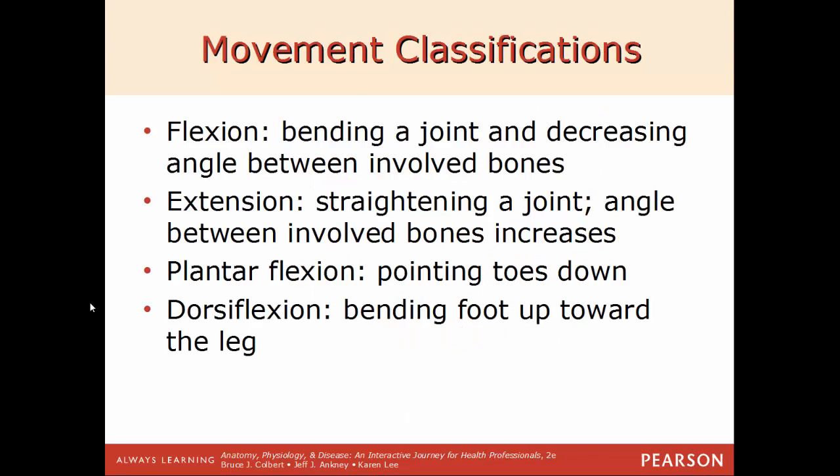Now we'll move on to the different classifications of movement. Many of these have an opposite type of movement. Flexion is when you're bending a joint and decreasing the angle between the bones involved — for example, flexing your bicep decreases the angle between the upper and lower arm bones. The opposite is extension — straightening out the arm increases that angle. Plantar flexion and dorsal flexion involve the feet. Plantar refers to the bottom of the foot, so plantar flexion is pointing your toes downward. Dorsal flexion is bending the top of your foot toward your shin, like standing on your heels.